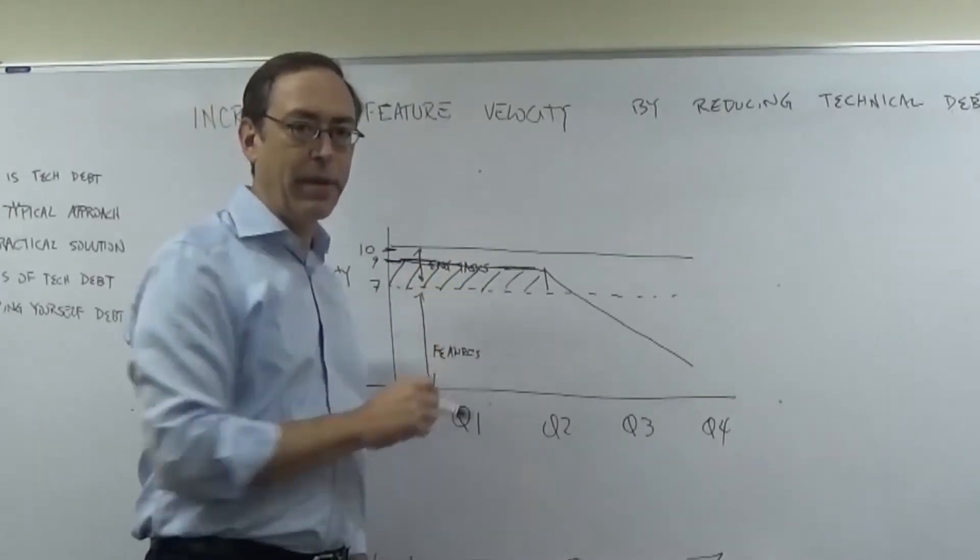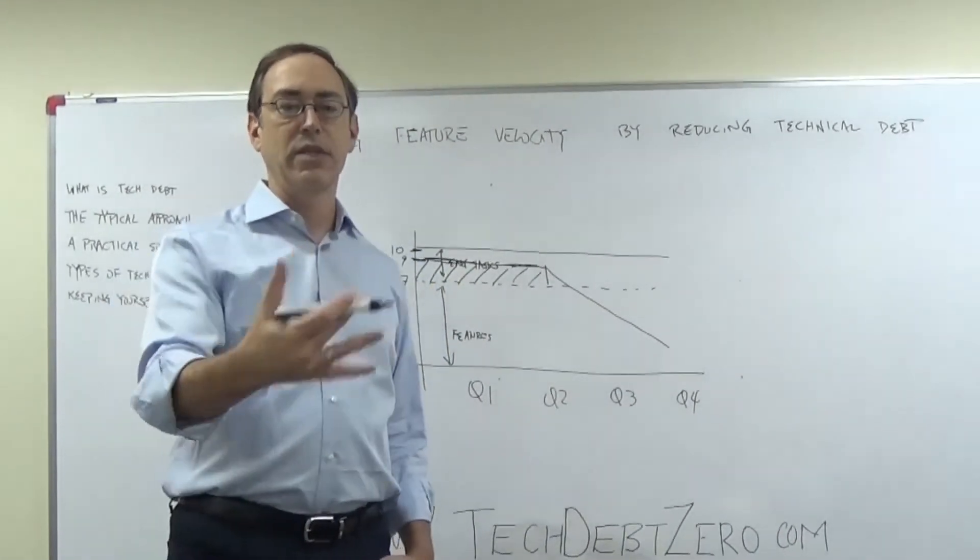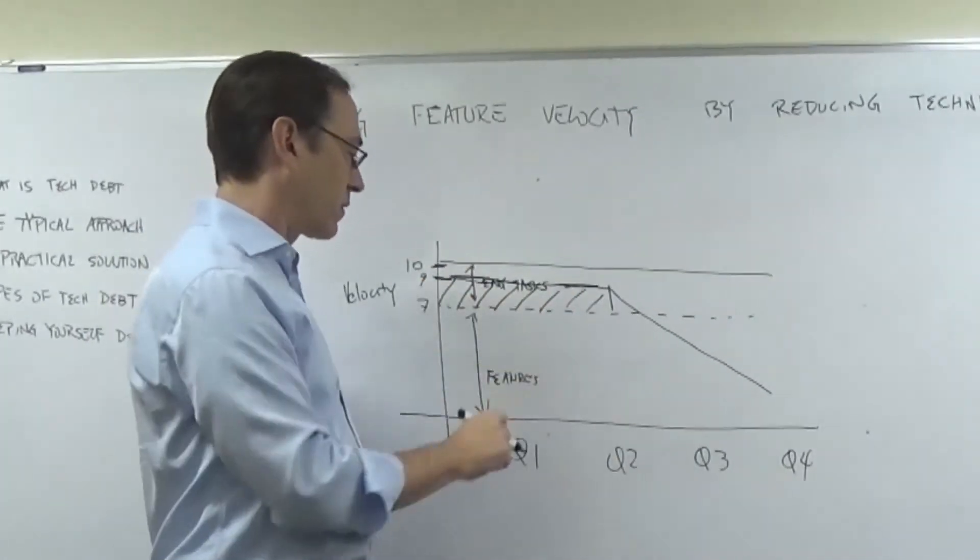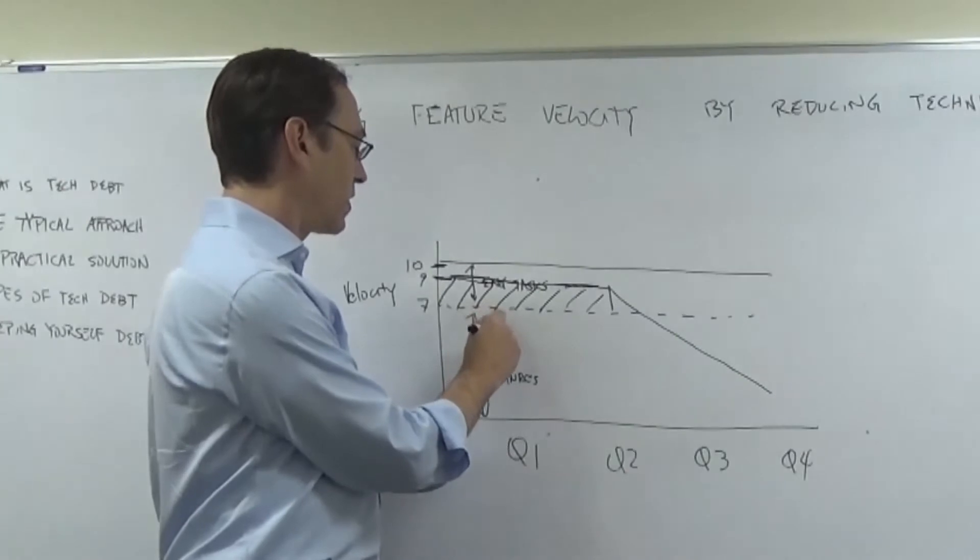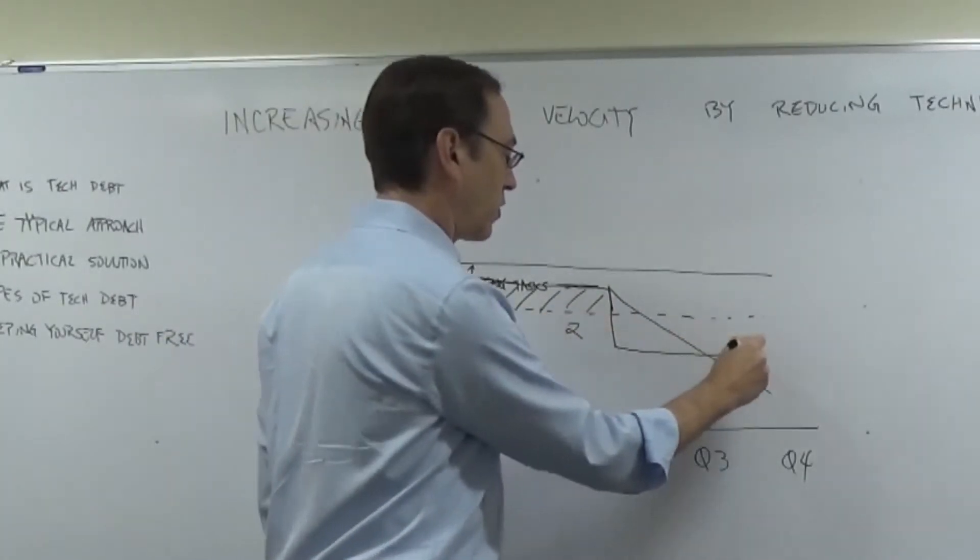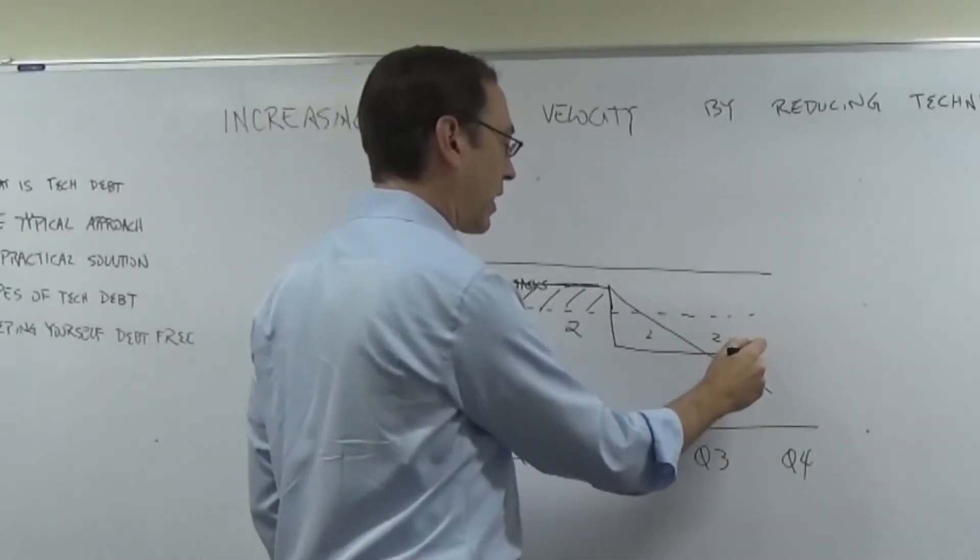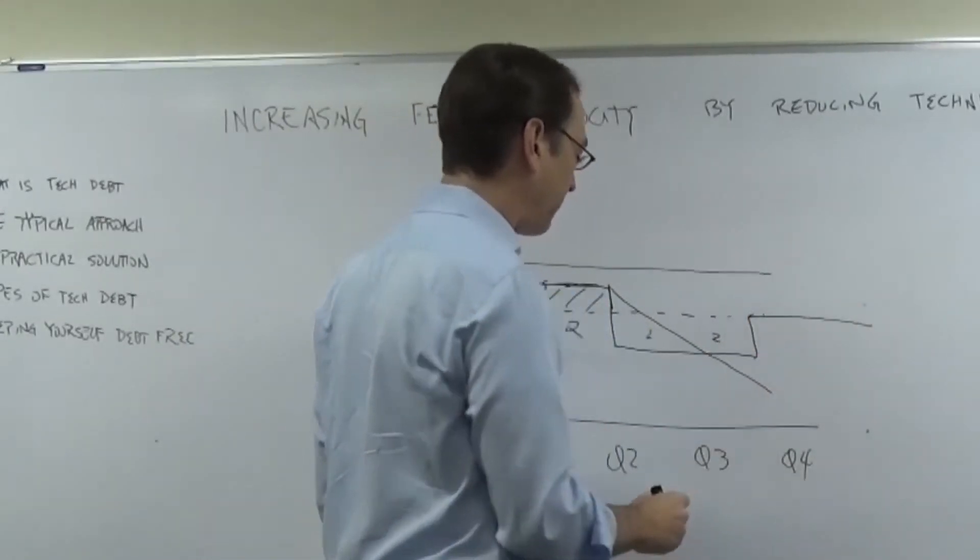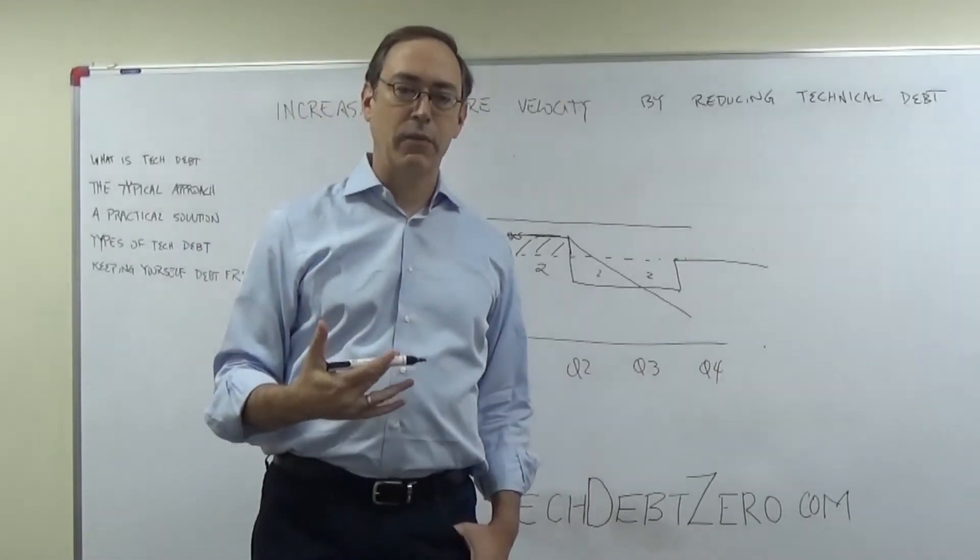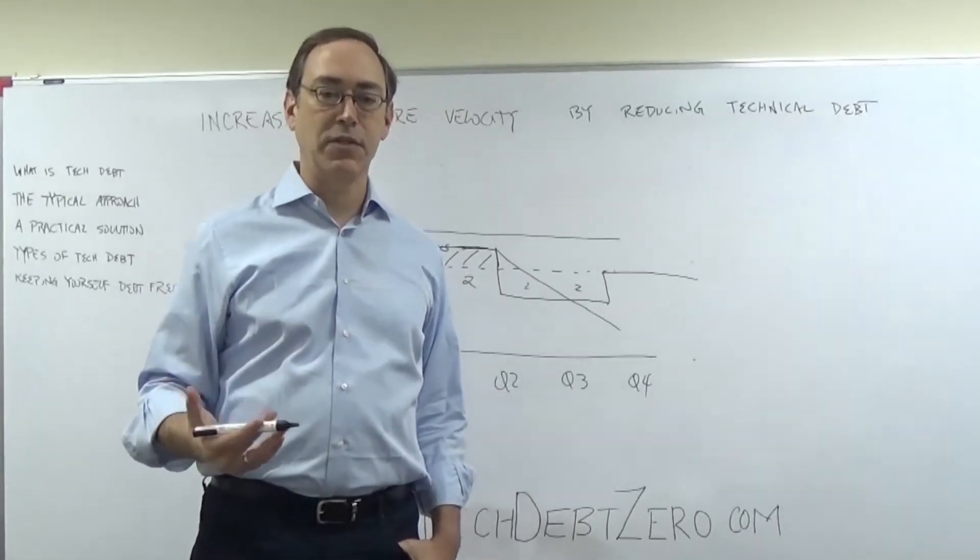Not only do you have to pay back this debt, and what you would hope is that if you've borrowed for, let's say, two quarters, if you delivered nine features for two quarters, you've borrowed two features here, you've borrowed two features here. So if you give back two for two quarters, then you would be back on track and you get back to your natural velocity. But in fact, what happens is you end up having to pay back more than what you borrowed. And that's the interest concept, which makes debt a useful analogy.